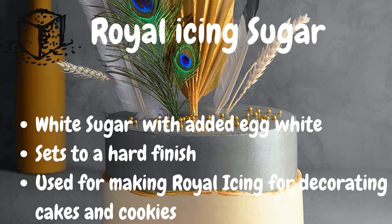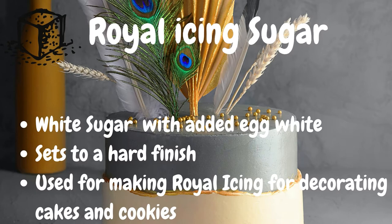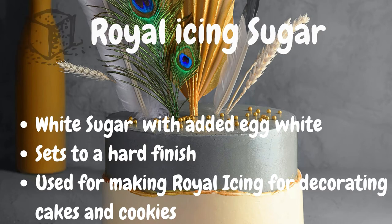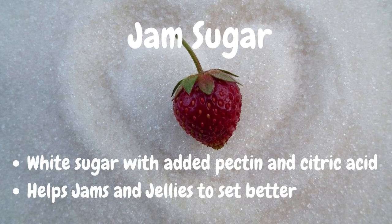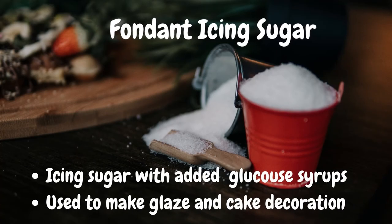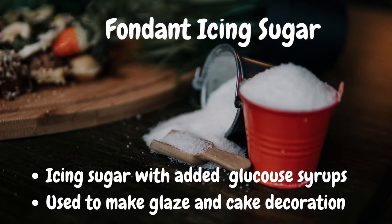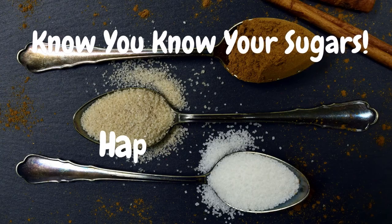Royal icing sugar is white sugar with added egg white. It sets to a hard finish and it's good for making royal icing, which you can use to decorate your cakes and cookies. When I'm making jam, I use jam sugar — it has added pectin and citric acid, which helps jam and jelly set better, so if you're going to be making jam at home, use jam sugar for this. Fondant icing sugar is not very common and it's used for making glazes and cake decoration — it's basically icing sugar with added glucose syrup.